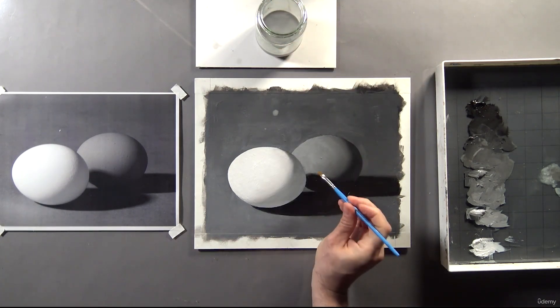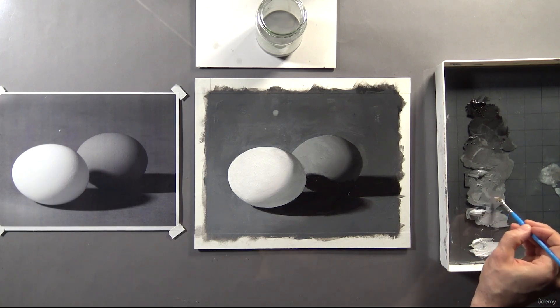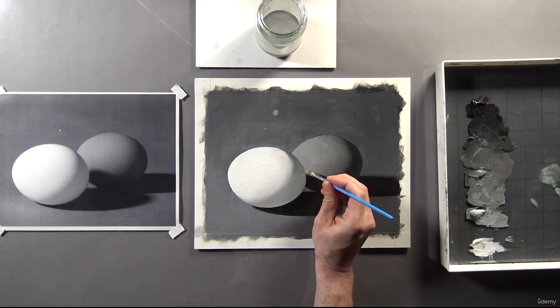Okay, now for the tricky part. I have to put down some paint for the light value on the egg, but in this case it's a gradient. So I'm going to choose the average tone, which I think is around second and a half value. So I'll start there and see how that looks.